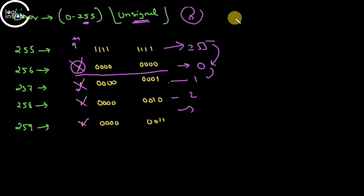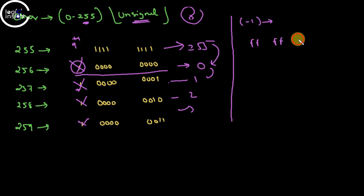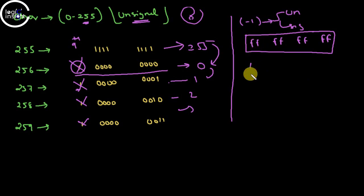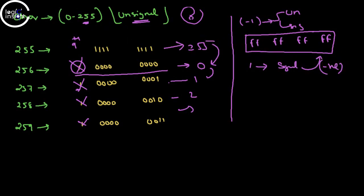Applying the same logic to integers: -1 stored in an integer is represented as FFFFFFFF in hex, meaning thirty-two 1-bits. Whenever you store -1, whether in unsigned or signed, the value is stored in this all-ones form. The difference comes when retrieving. The MSB (most significant bit) is 1, so in the signed case it is treated as a negative number and two's complement is performed on this value.